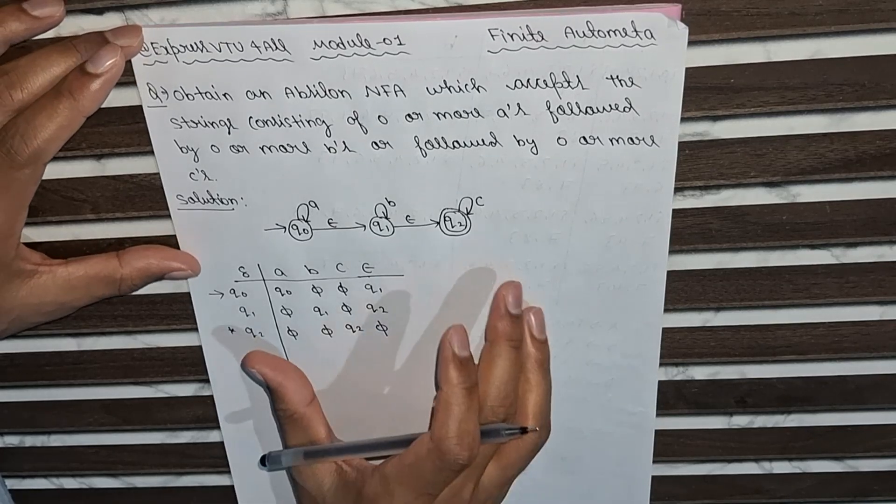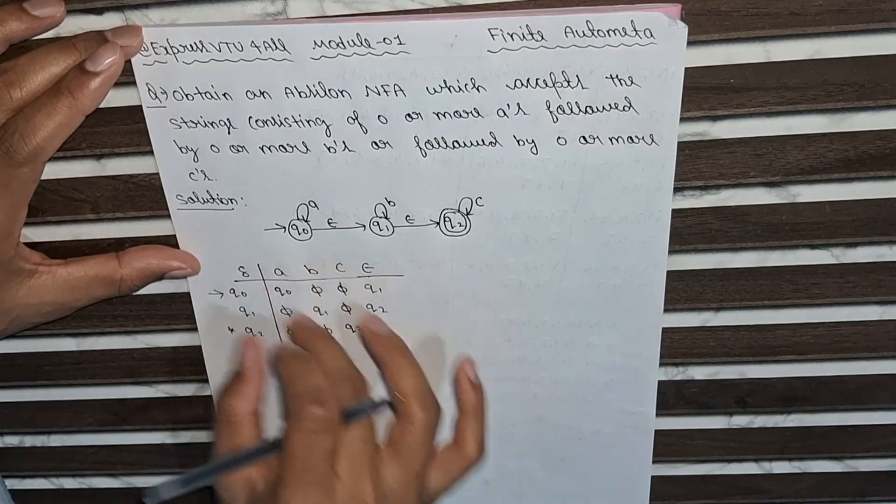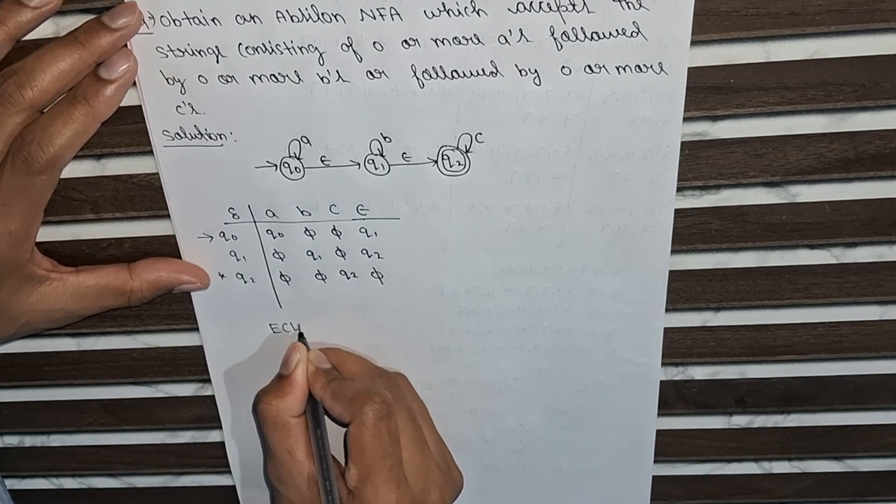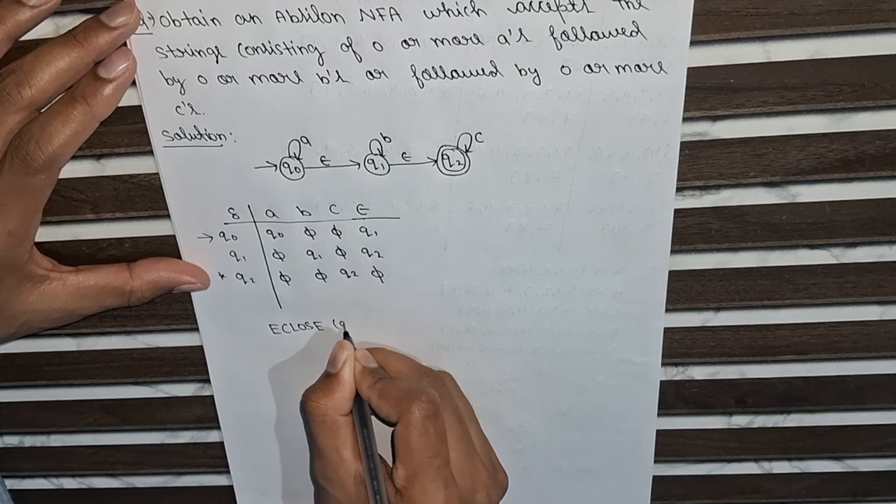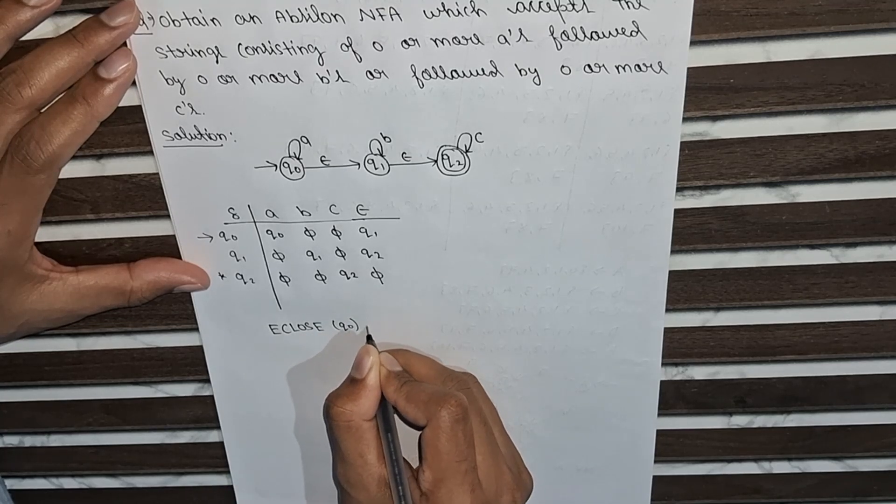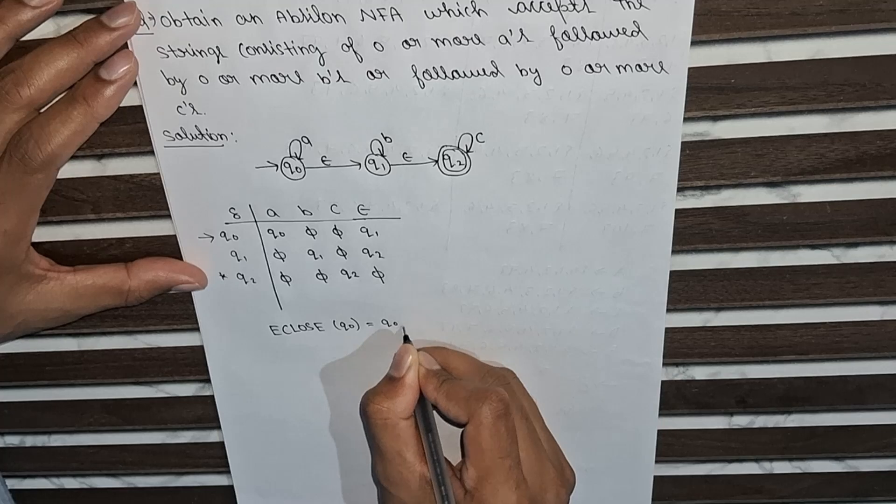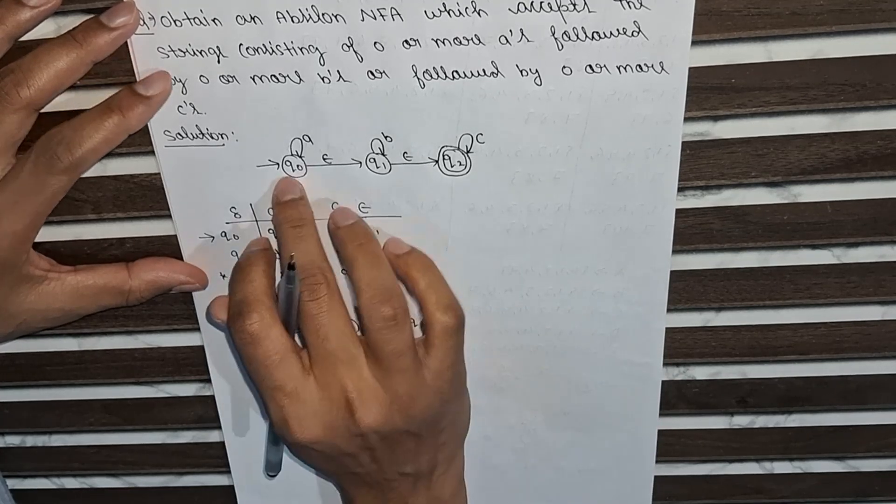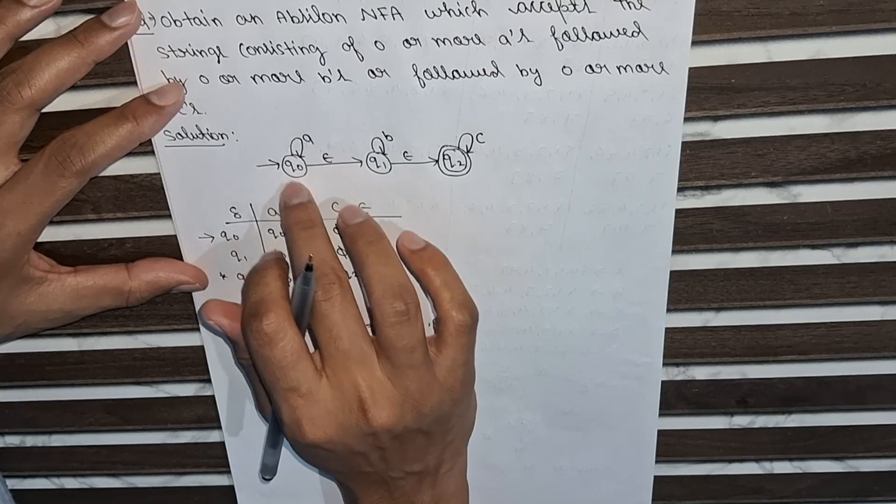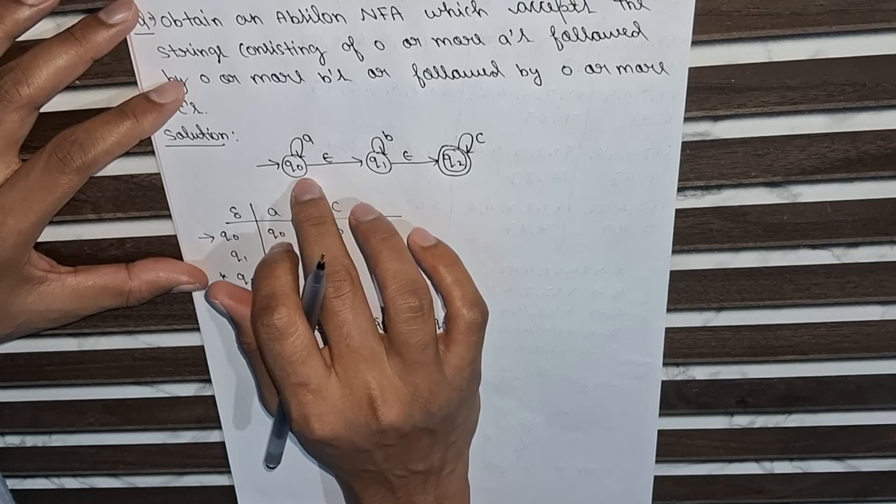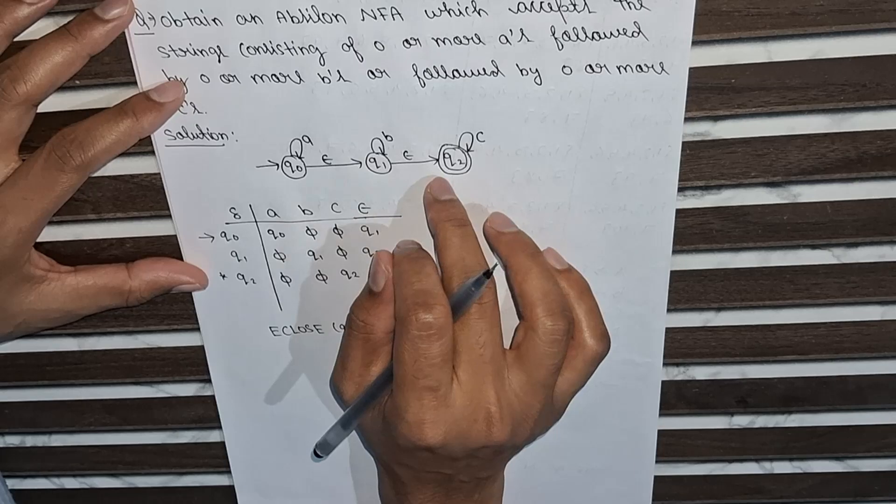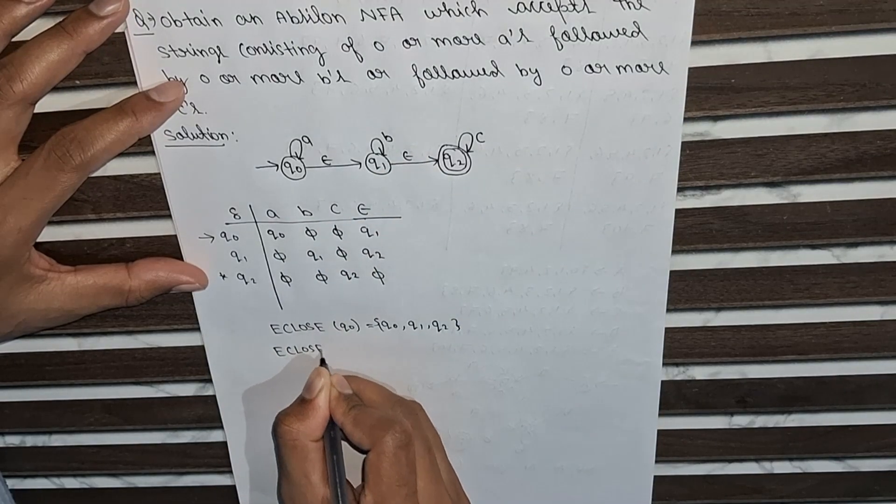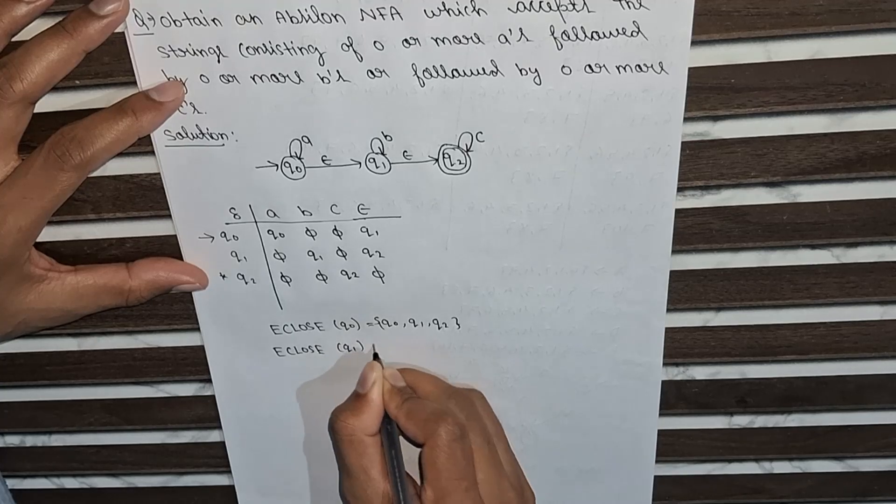So now we can also conclude the e-closure of these things. What will be the e-closure of q0? It is nothing but q0, q1, comma q2, because from q0 the epsilon itself, q0 is accessible, and from q0 to q1 and q1 to q2, we can access this.